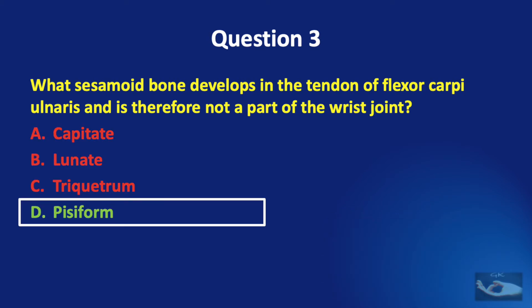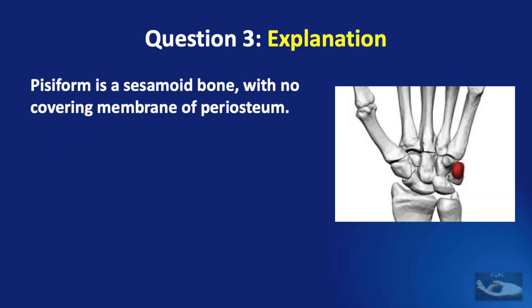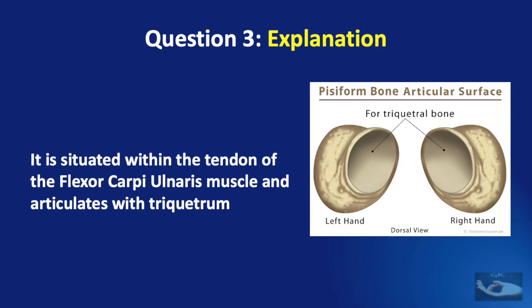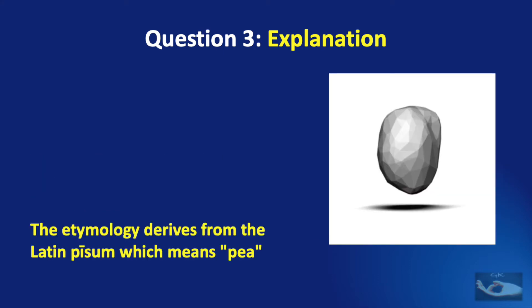The correct answer is the pisiform. The pisiform is a sesamoid bone with no covering membrane of periosteum. It is the last carpal bone to ossify. It is situated within the tendon of the flexor carpi ulnaris muscle and it articulates with the triquetrum alone. The name pisiform derives from the Latin 'pisum' meaning pea, which resembles the shape and size of the pisiform bone.